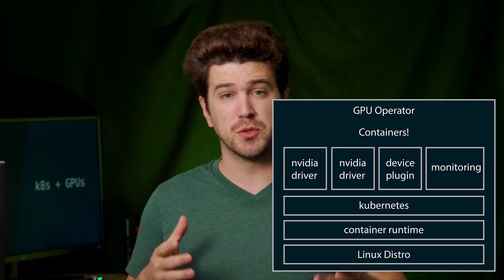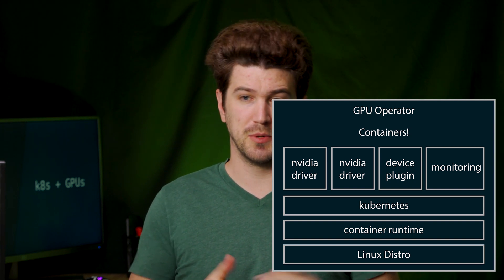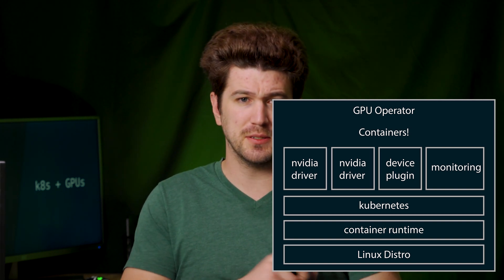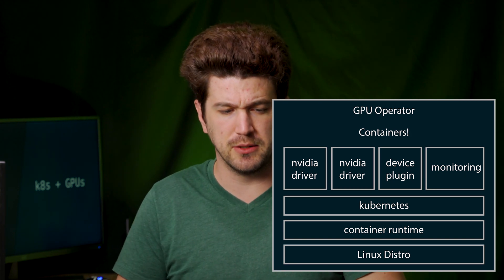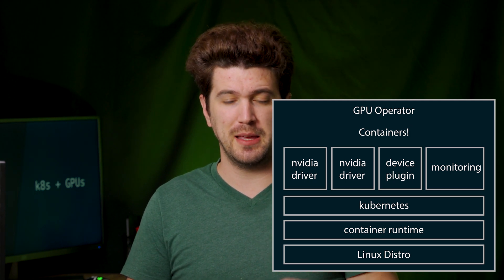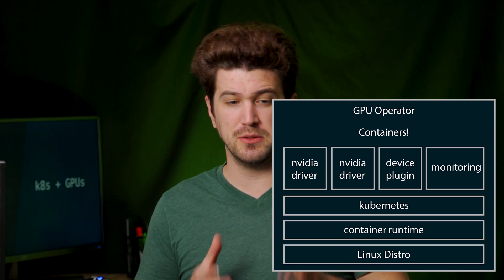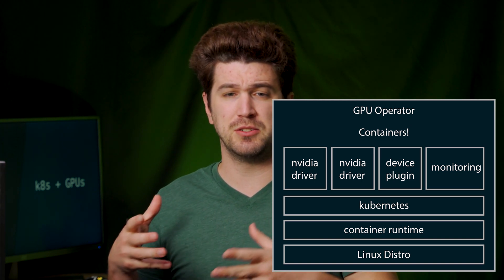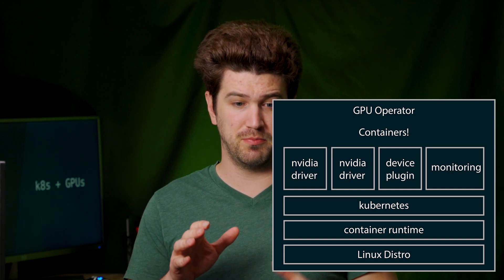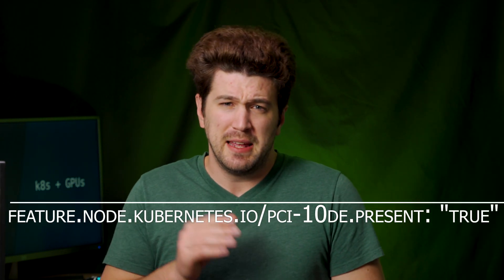The GPU operator does a couple of things. First, when a node joins the cluster or when you first install it, it installs a first DaemonSet on every single node. What this DaemonSet does is go through and label nodes where it finds GPU hardware via PCI. Once it finds all the GPUs, it labels those nodes — it puts a label saying this node has a GPU. Then on every node that's been labeled, it installs another DaemonSet — but only on nodes with that label.